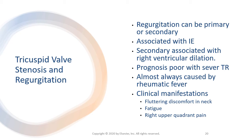Tricuspid regurgitation, or TR, can be primary or secondary. Primary TR is less common and is typically due to infective endocarditis. Secondary TR can be caused by right ventricular dilation from pulmonary hypertension, cor pulmonale, or a pulmonary outflow tract obstruction. The patient doesn't show jugular vein distension, enlarged liver, and pulmonary edema until the regurgitation is severe. Diagnosis is made by history, physical examination, and echocardiogram.